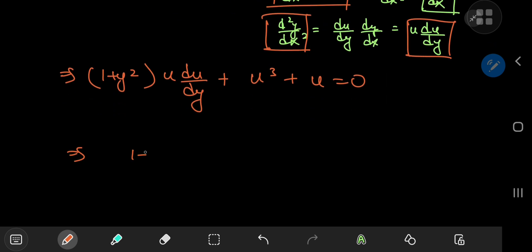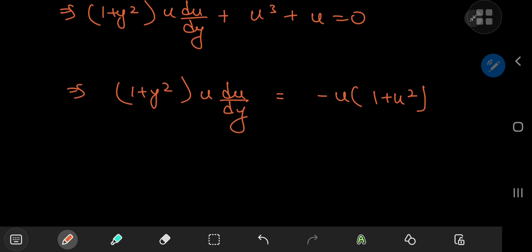Rearranging things, I have (1 + y²) times u times du by dy equal to negative u times (1 + u²), where I've factored out a u variable there. So I can cancel out the u's here.